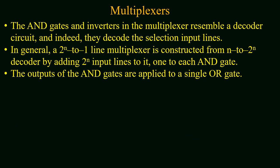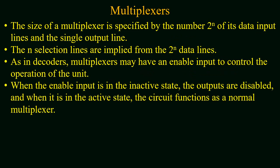The AND gates and inverters in the circuit diagram of a multiplexer resemble a decoder circuit, and indeed they decode the selection input lines. In general, a 2^n-to-1 line multiplexer is constructed with an n-to-2^n decoder by adding 2^n input lines to it, one line to each AND gate. The outputs of the AND gates are applied to a single OR gate for the output of the multiplexer. The size of the multiplexer is specified by the number 2^n of its data input lines, where the n selection lines are implied from the 2^n data lines.